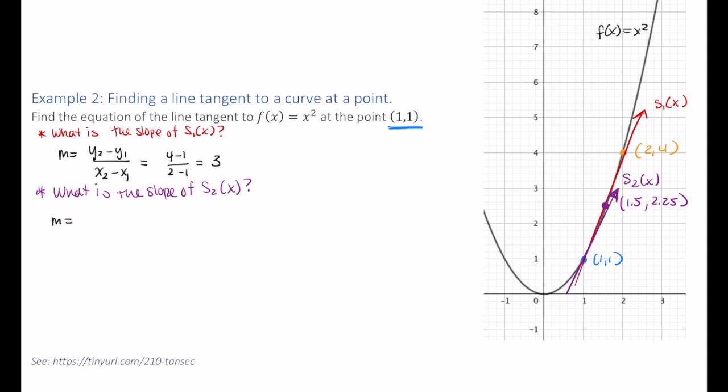I'm going to call this one S2(x). Using the same formula as above, I have (2.25-1)/(1.5-1). And that gives me a slope of 2.5. So the slope of this first secant line is 3, this slope is 2.5.